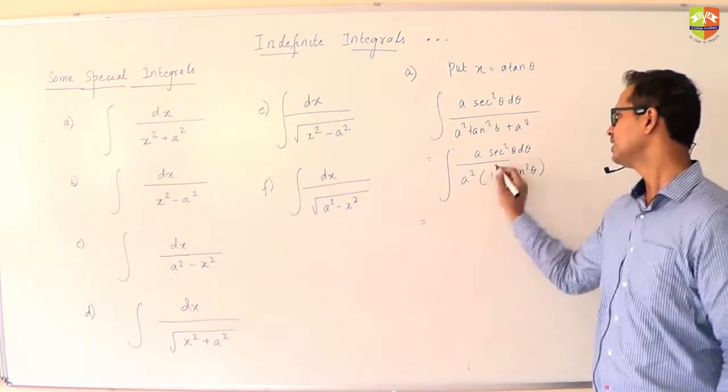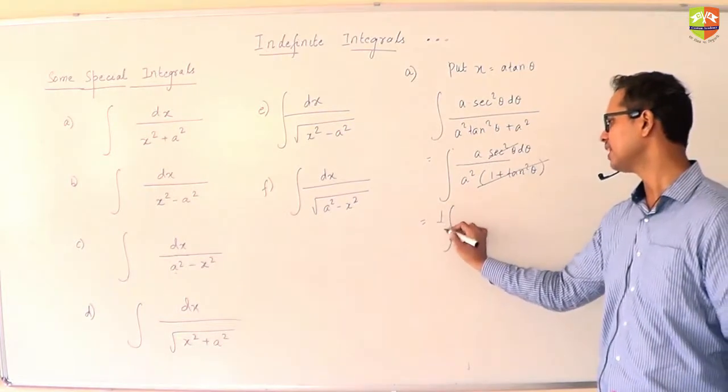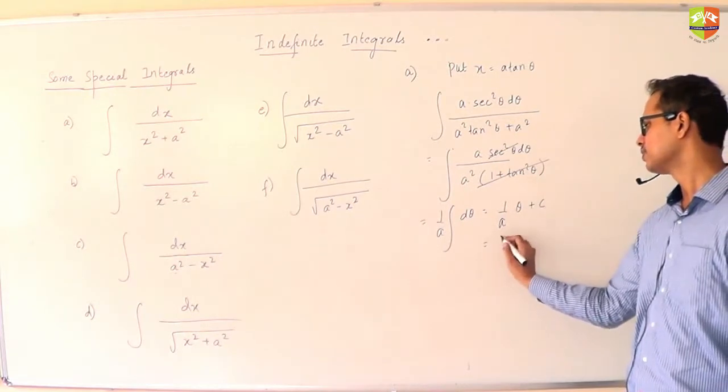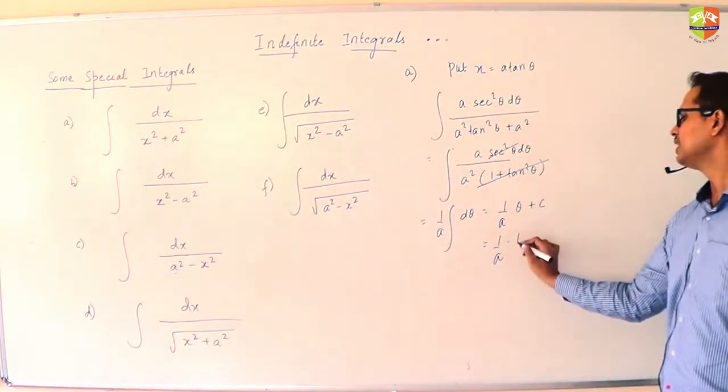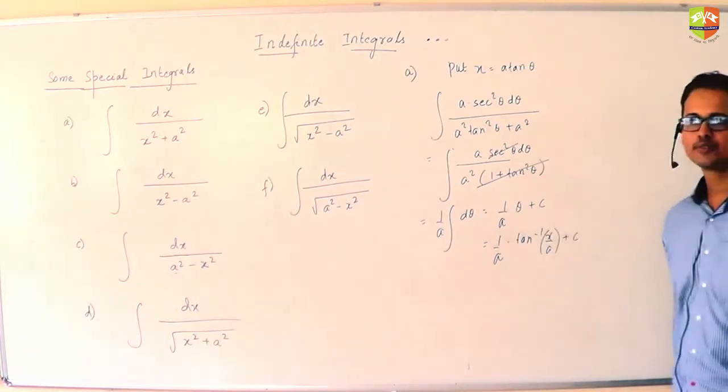So if I take a squared sec squared common in the denominator, I will have a squared sec squared times 1 plus tan squared theta. Sec squared and 1 plus tan squared will get cancelled off. So we will be left with 1 by a integral d theta, which is 1 by a theta plus C, which you can write as 1 by a tan inverse of x by a.